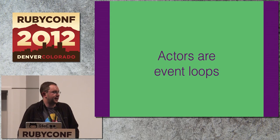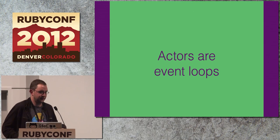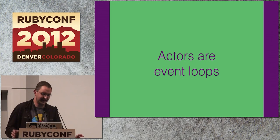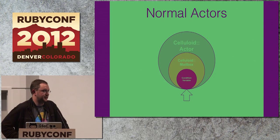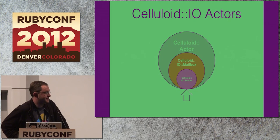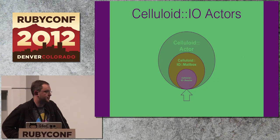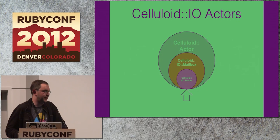The basic idea of Celluloid IO is that these actors — these cells — each of them is an event loop, singularly processing messages. This is really similar to the type of event loop you'd use in EventMachine or Node, except in those systems you only get one. Celluloid gives you as many as you want. Your normal actor is built on the Celluloid mailbox, which contains a condition variable that the actor is actually blocking on when waiting for work. What Celluloid IO does — using a dependency injection API — is swap out the mailbox with its own mailbox with its own reactor. This thing waits for messages using a pipe, which lets it multiplex incoming requests: synchronous calls, asynchronous calls, and IO all at the same time.